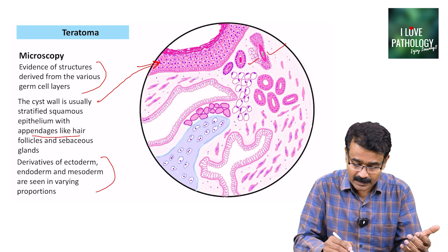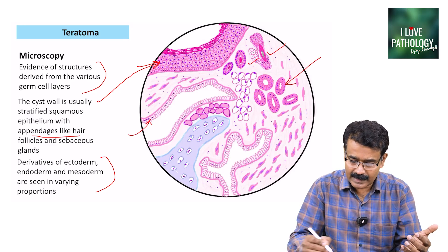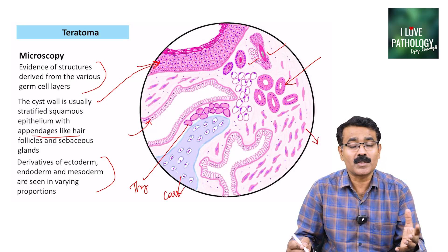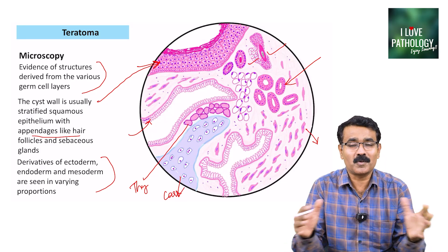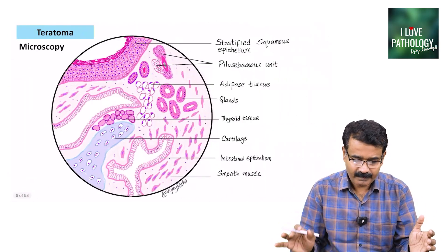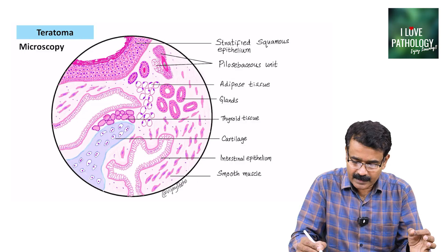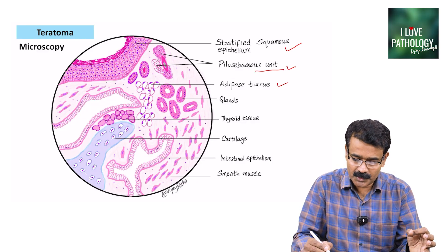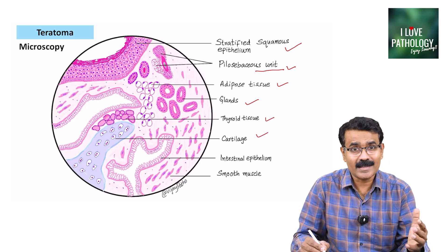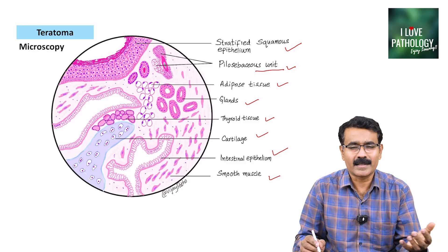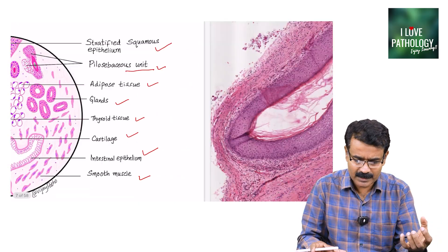In the illustration, you can see glands, thyroid follicular epithelial cells, cartilage, and smooth muscle — basically almost all kinds of cells in a mature teratoma. So that is the stratified squamous epithelium with the pilosebaceous unit. You also have adipose tissue, glands, thyroid tissue, cartilage, intestinal epithelium, and smooth muscle.